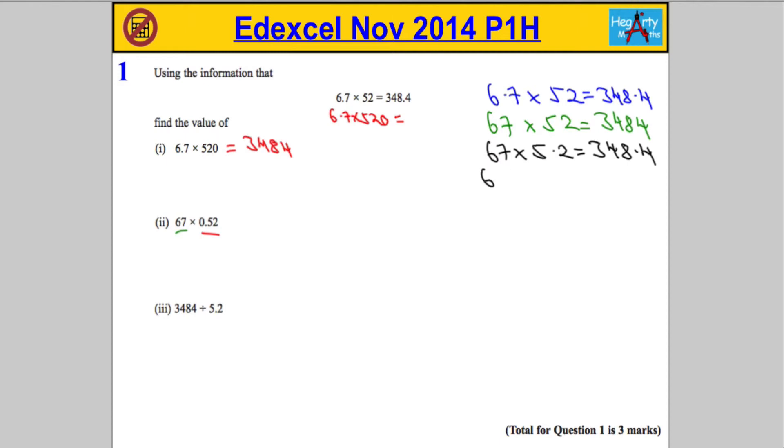And one more adjustment, because I don't want 5.2, I want 0.52. So let's make it 10 times smaller again. 0.52 here is going to give us an answer again that's 10 times smaller than this, which is going to be 34.84.